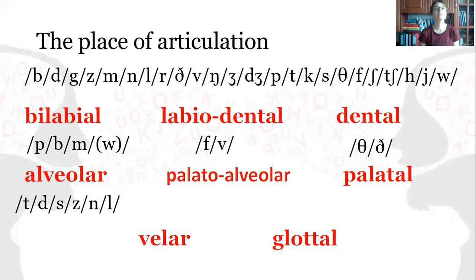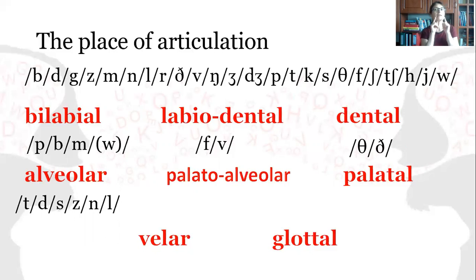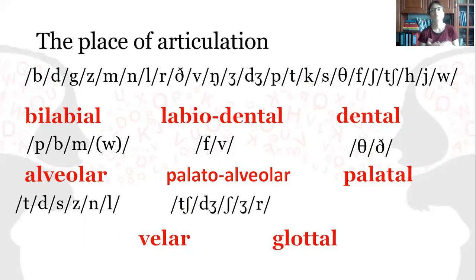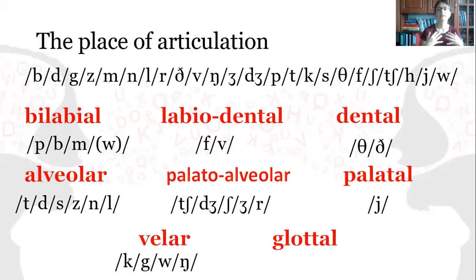The alveolar sounds include T, D, S, Z, N, and L. Then we have palatal-alveolar sounds, and finally H, which is a glottal sound in English.